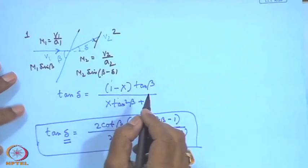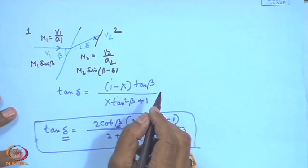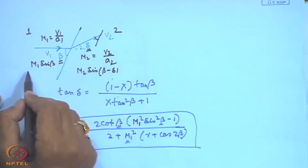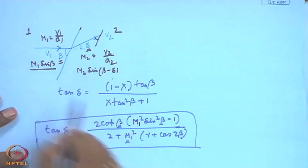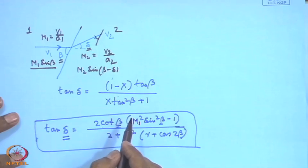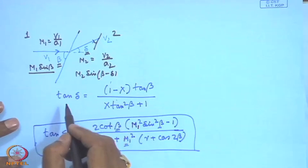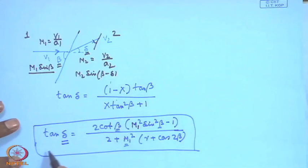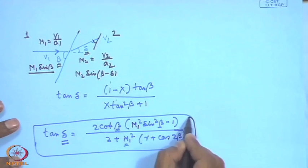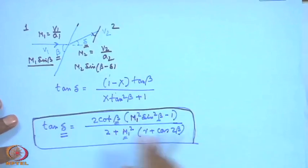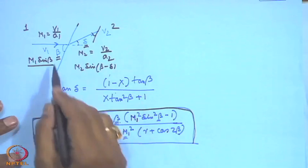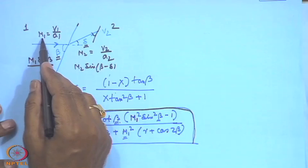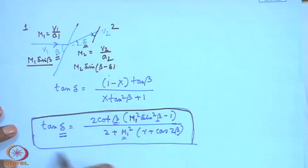We discussed and finally appreciated that a relationship between beta, delta, and the initial Mach number M1 is very important. From a trigonometric relationship we arrived at: tan(delta) equals a function involving (1 minus x), where x is a defined quantity. This expression, where delta is the deflection angle, beta is the shock wave angle, and M1 is the approach Mach number, is a very important relationship.